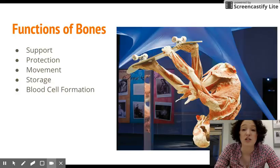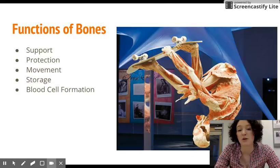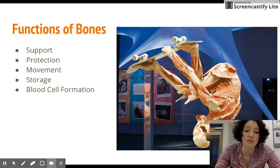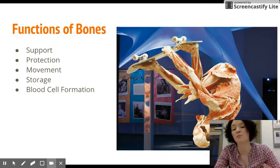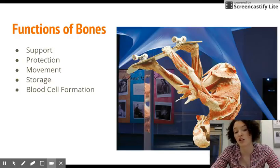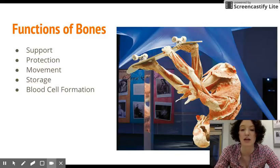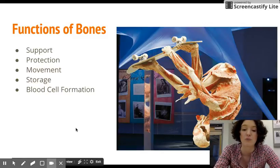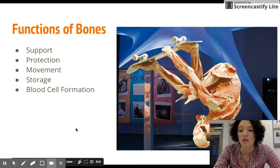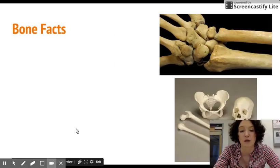Storage is another function. Fat is stored in the marrow of bones, and bones store minerals like calcium and phosphorus. There's also a blood cell formation aspect — blood cells are created in the marrow of certain bones. So there are lots of functions of bones.